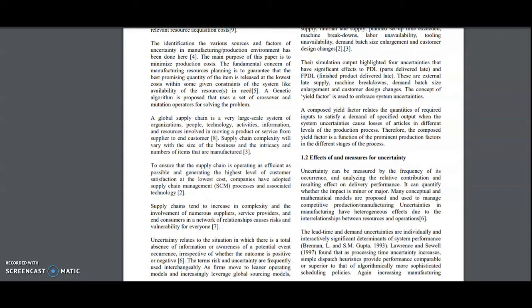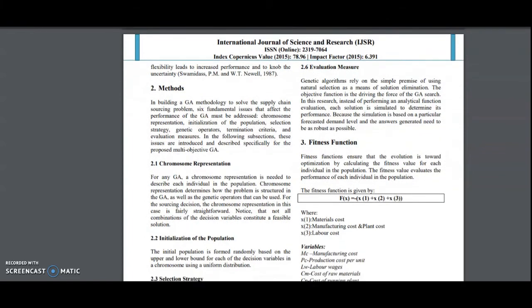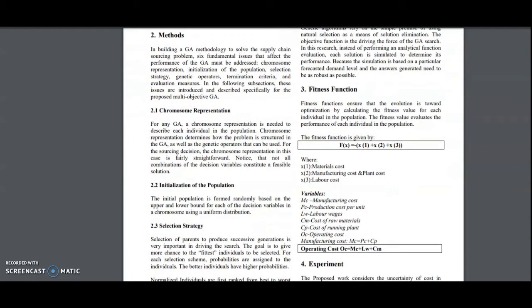Now coming to the uncertainty, why it is affecting is that irrespective of whether the outcome is positive or negative, there is a total absence of information that is leading to this uncertainty. Uncertainty can be measured by the frequency of its occurrence, and there are different types of methods that can be used for solving this uncertainty problem. One of the standard methods is using genetic algorithm.